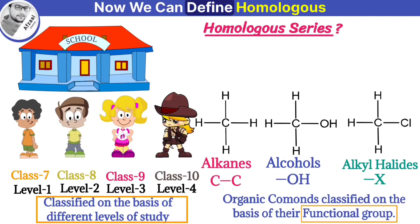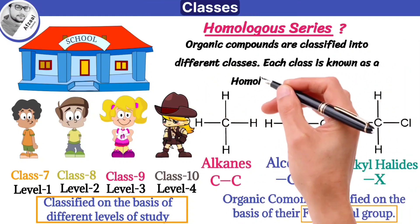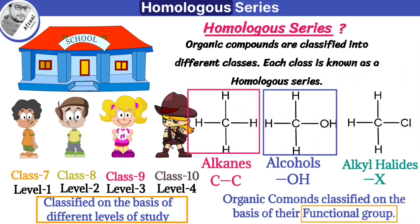Now we can define homologous series. Organic compounds are classified into different classes. Each class is known as a homologous series.